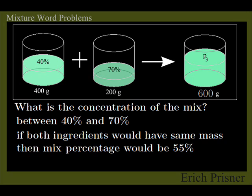What if both ingredients would have the same mass, say 300g? Wouldn't then the percentage of the mix be just in the middle between these numbers? Wouldn't it be 55%, the mean of the two numbers, 40% and 70%? Yes, it would.